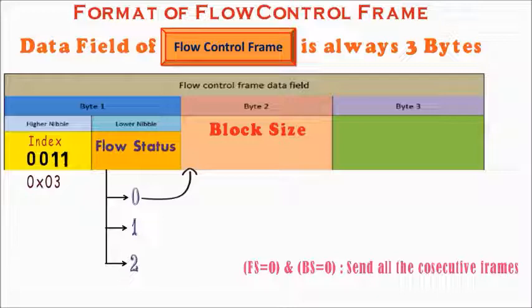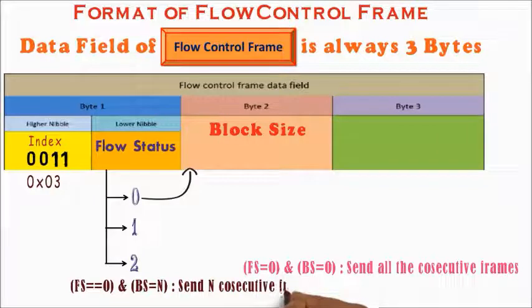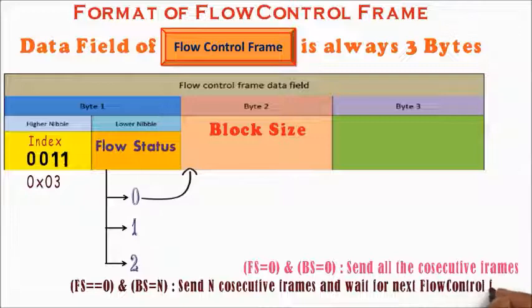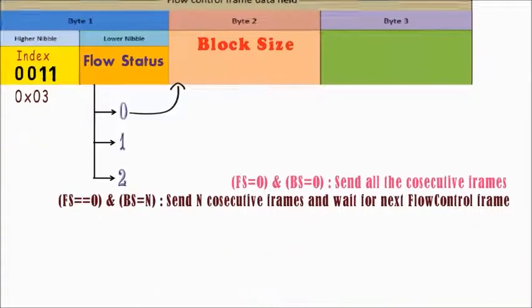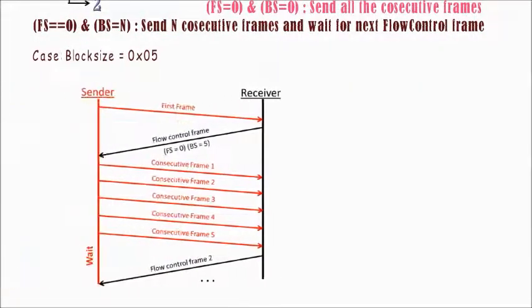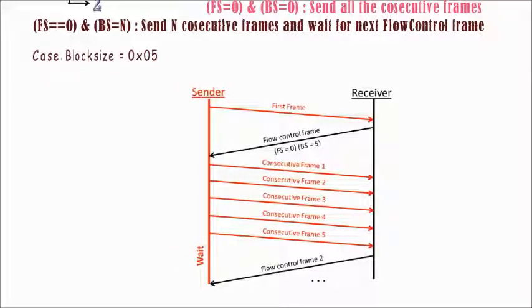Otherwise, send the number of consecutive frames as equal to the block size and wait for one more flow control frame then. For example, if block size is 5, then it means sender can send 5 consecutive frames and then wait for the receiver to send one more flow control frame.